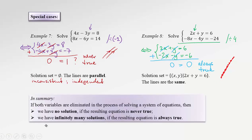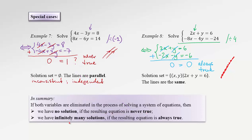Let's summarize our findings. If both variables are eliminated in the process of solving a system of equations, then we have no solution if the resulting equation is never true, and we have infinitely many solutions if the resulting equation is always true.